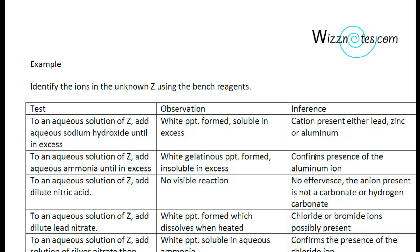We will then test if there is a halide present. And by halide we are testing for chloride ions and bromide ions. A test for chloride ions and bromide ions is the addition of lead nitrate, dilute lead nitrate. And if a white precipitate is formed which dissolves when heated, then we know that there is a possibility of the chloride or bromide ions being present.